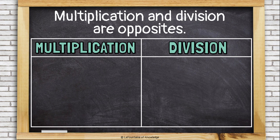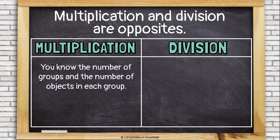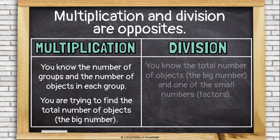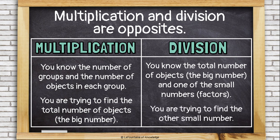Multiplication and division are opposites. When you multiply, you know the number of groups and the number of objects in each group — you're trying to find the total number of objects, the big number. When you divide, you know the total number of objects, the big number, and one of the smaller numbers, called factors. You're trying to find the other small number, the other factor.